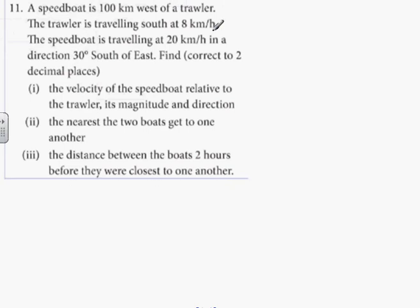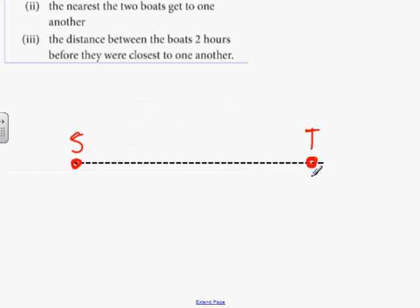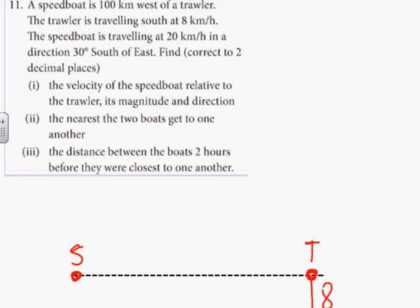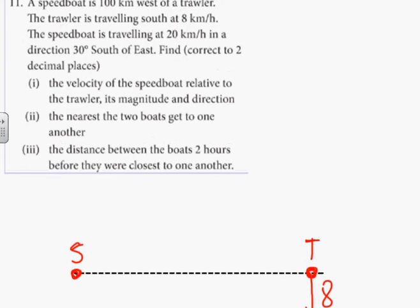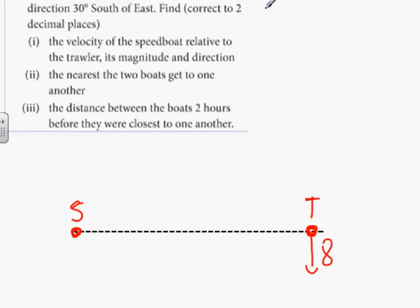Question 11. A speedboat is 100 kilometers west of a trawler. The speedboat is S, the trawler is T. The trawler is traveling south at 8 kilometers an hour, and the speedboat is traveling at 20 kilometers per hour in a direction 30 degrees south of east.